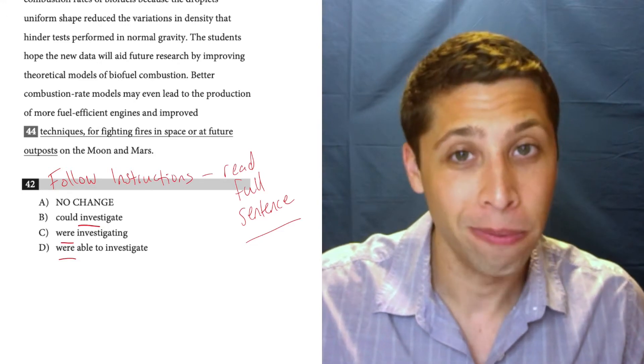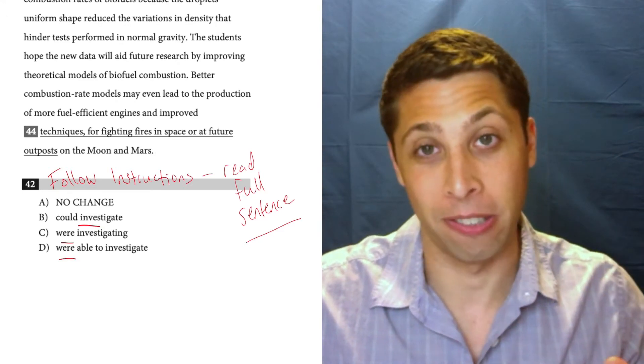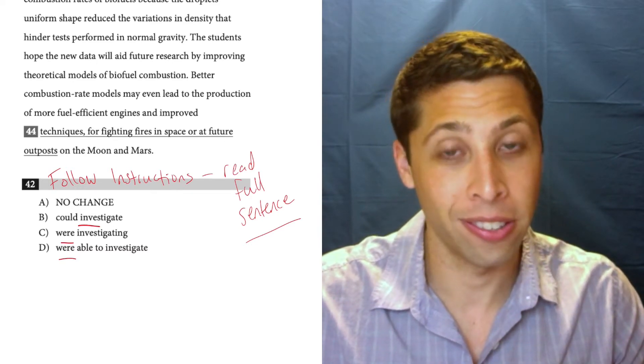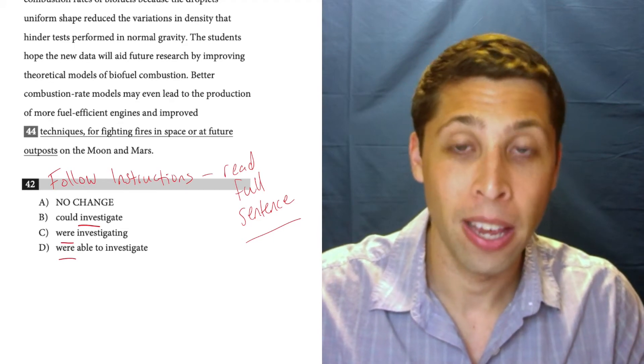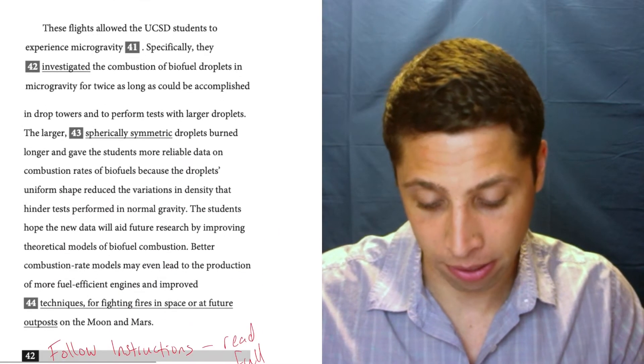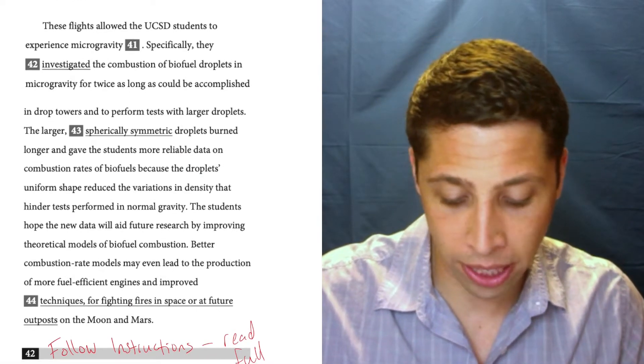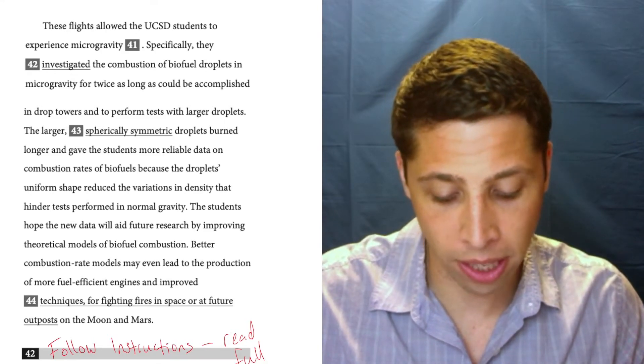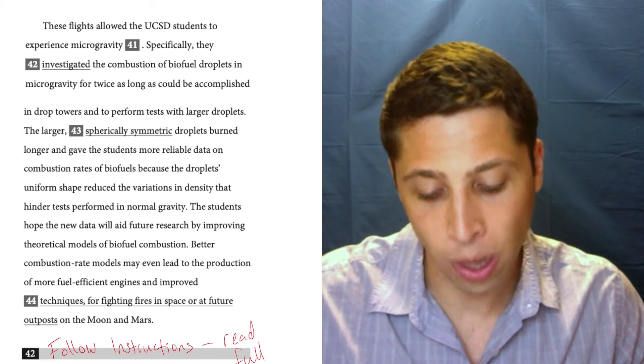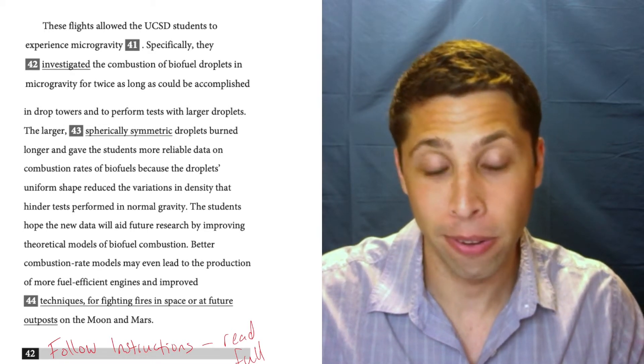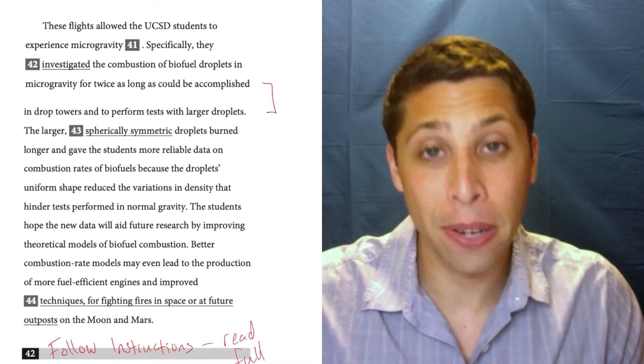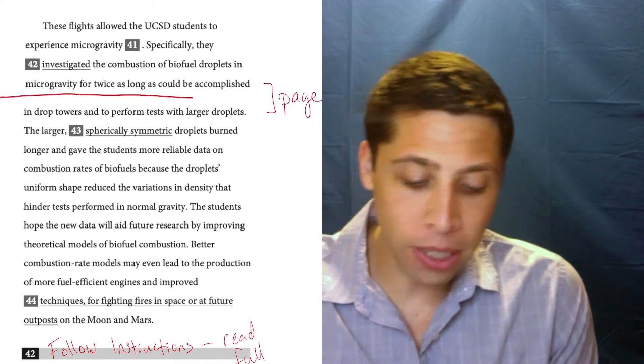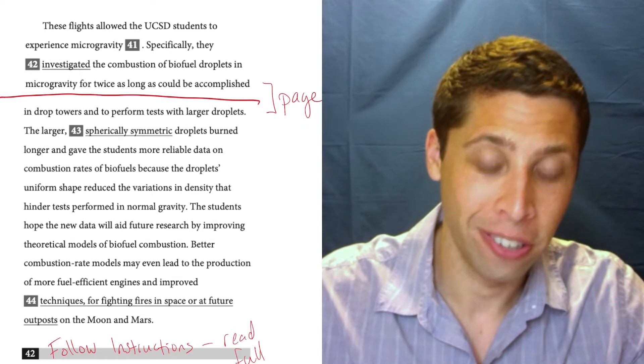We should know that the SAT in all the sections—math, reading, writing—designs questions to take advantage of people who are lazy. If you were lazy here, you probably picked A because, look, it sounds fine: 'specifically they investigated the combustion of biofuel droplets in microgravity.' We can even read a little bit more, and it sounds totally fine. Now the problem is that this big gap here on your test is actually a page break.